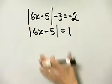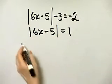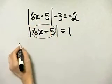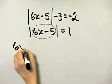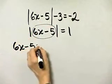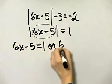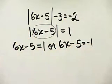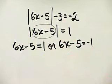Now, for the absolute value of 6x minus 5 to equal 1, that means what is inside — the expression 6x minus 5 — must equal 1, or 6x minus 5 must equal negative 1. All we need to do is solve these two linear equations.